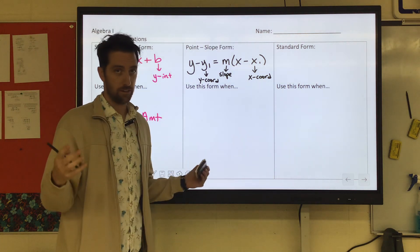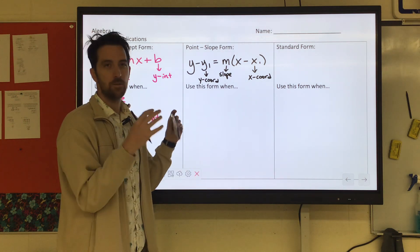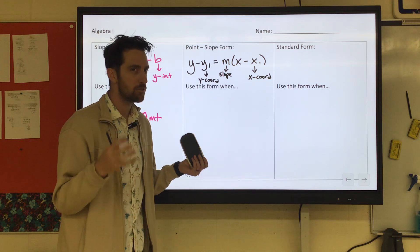So slope is like our rate of change. We just talked about that with slope-intercept form. But then it will give you a distinct point. Like if it were a graph, it gives you a starting place.